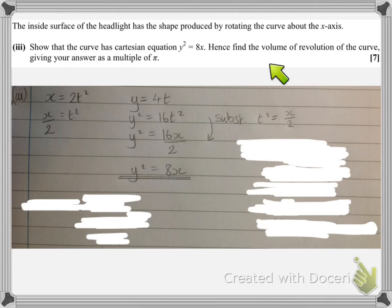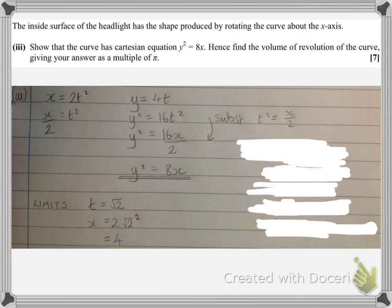Then we're moving on to finding the volume of revolution. We've got a formula for the volume of revolution, and we'll need to know what the limits are that we're going to use in that. Well, the original parametric equations were given with t values between minus root 2 and root 2. Now the x-coordinate we can see is 2t squared. So that will take its smallest value when t is 0, and the biggest value that x will take will be when t is root 2 or minus root 2. So if I use t is root 2, then x is 2 multiplied by root 2 squared, which is 4.